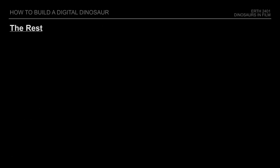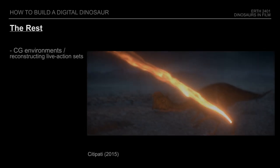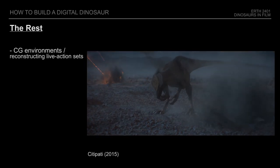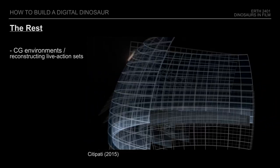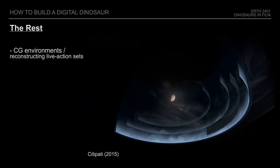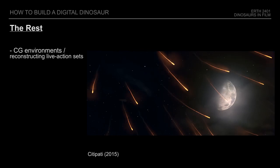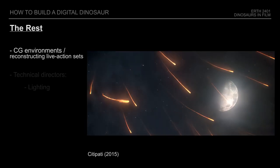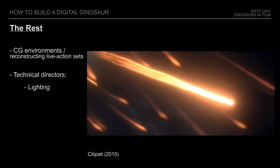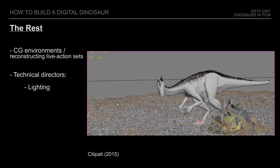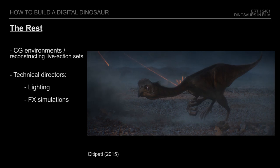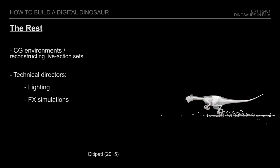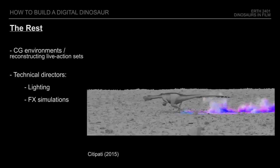Now that the dinosaur is fully prepared, the work is far from over. Depending on the type of project, the entire environment needs to be created as well if animated, or in the case of a live-action project, enough data collected on location in order to recreate it in the computer. Technical directors both ensure that the digital elements are lit properly, and recreate natural phenomena like smoke, fire, and water, or other kinds of simulations that would be too complicated to animate by hand.